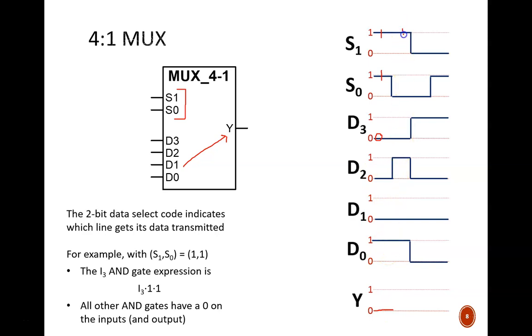In the next time slot, the select code 1, 0 indicates that data input 2 is selected. D2 holds a high value, so that high value passes through to Y. Continue this for the remainder of the diagram.